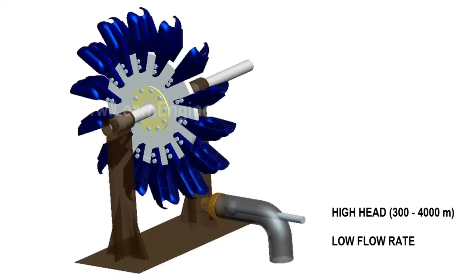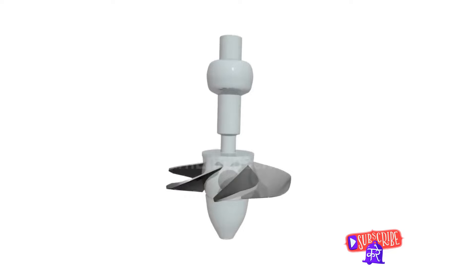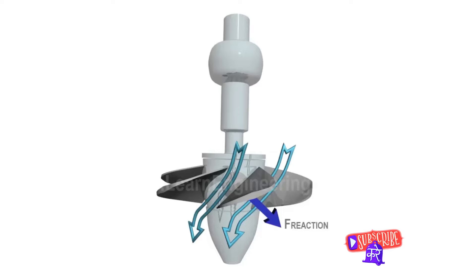However, it doesn't come without its drawbacks. The high-speed operation of the Pelton turbine necessitates robust and costly equipment. Additionally, it requires a high head, which limits its use to areas with significant elevation differences.